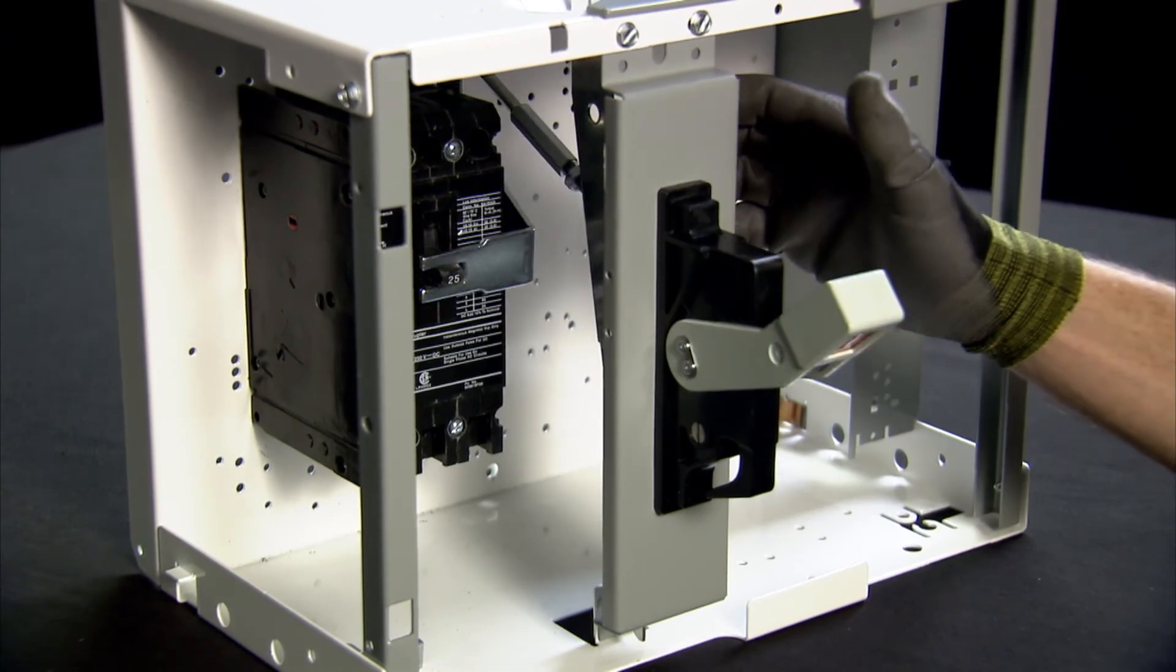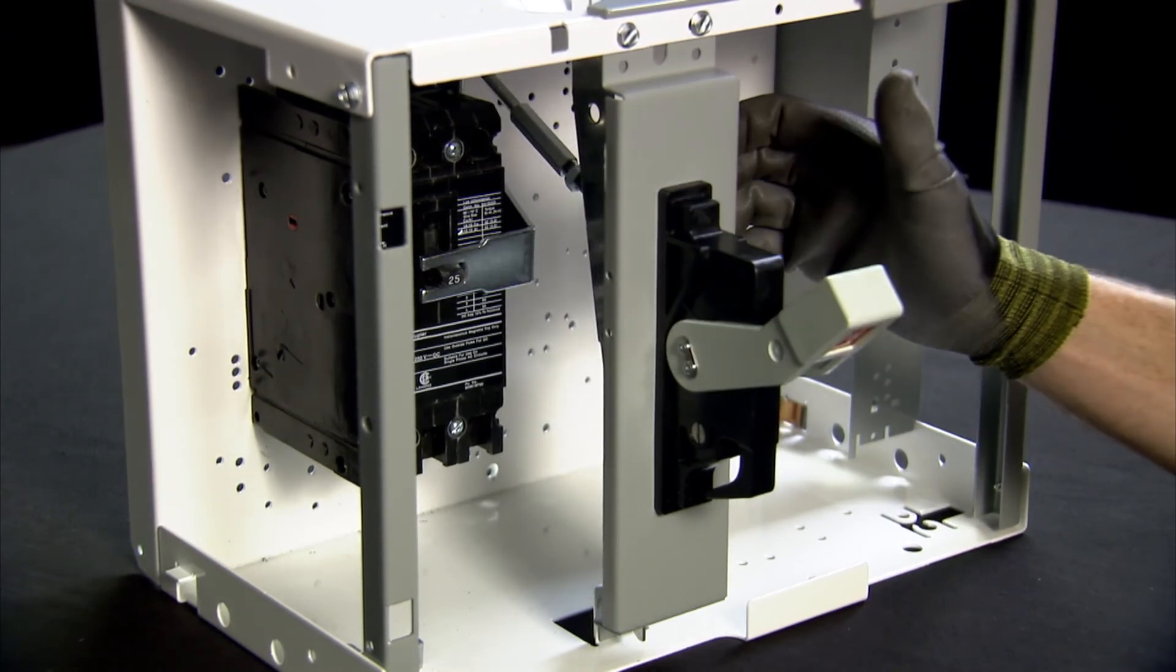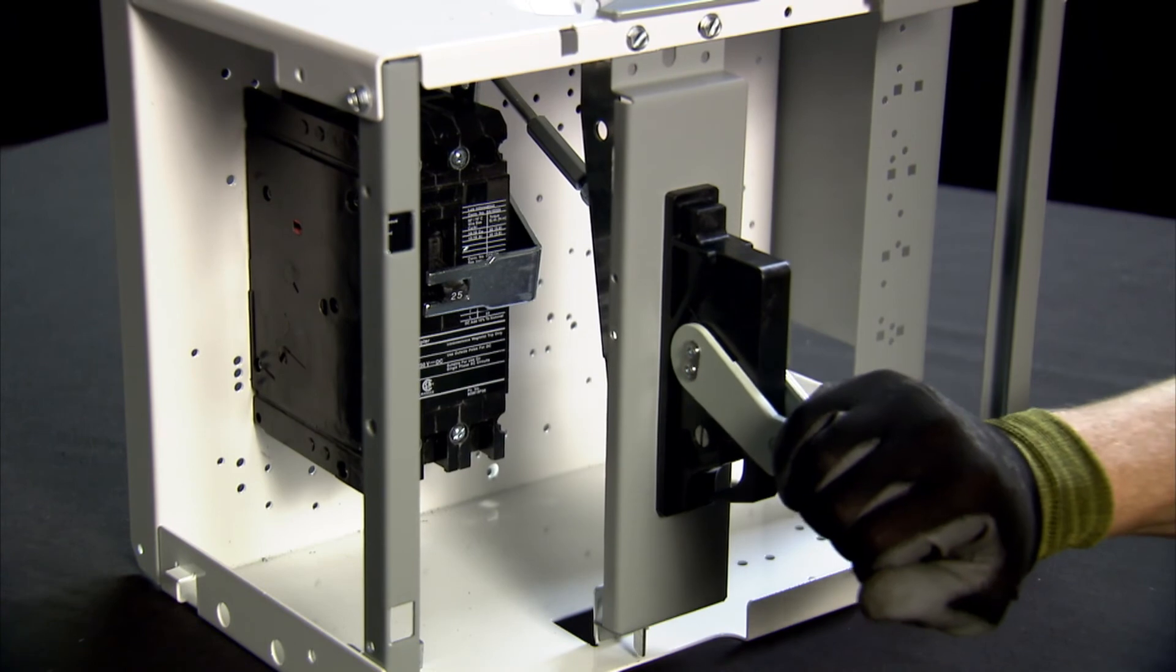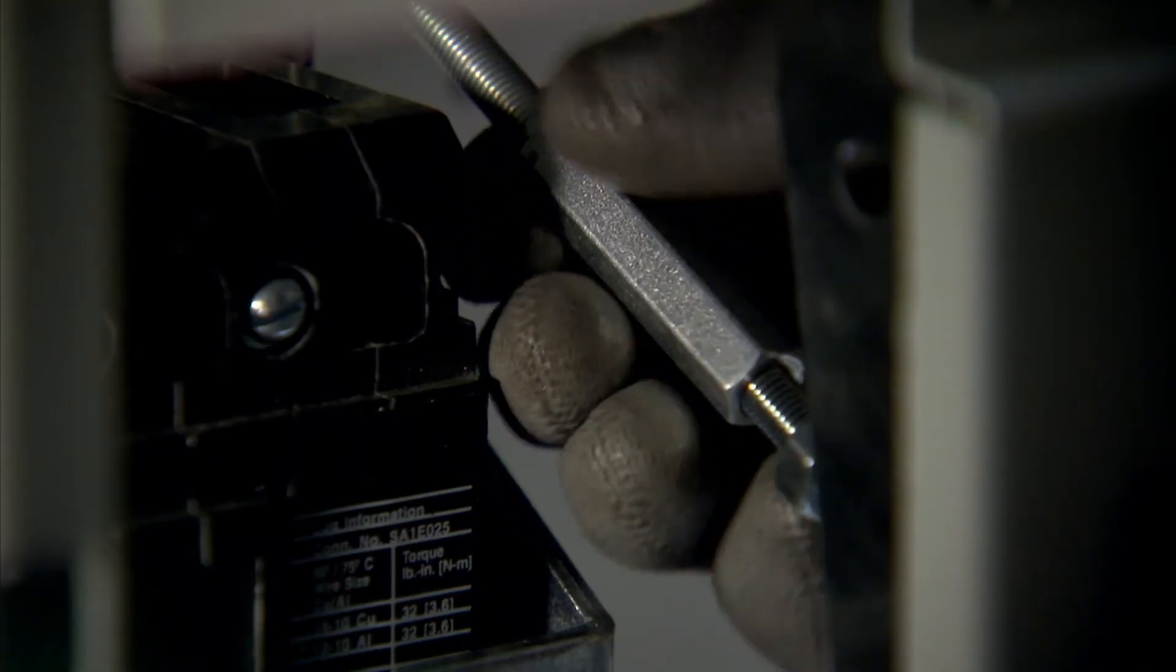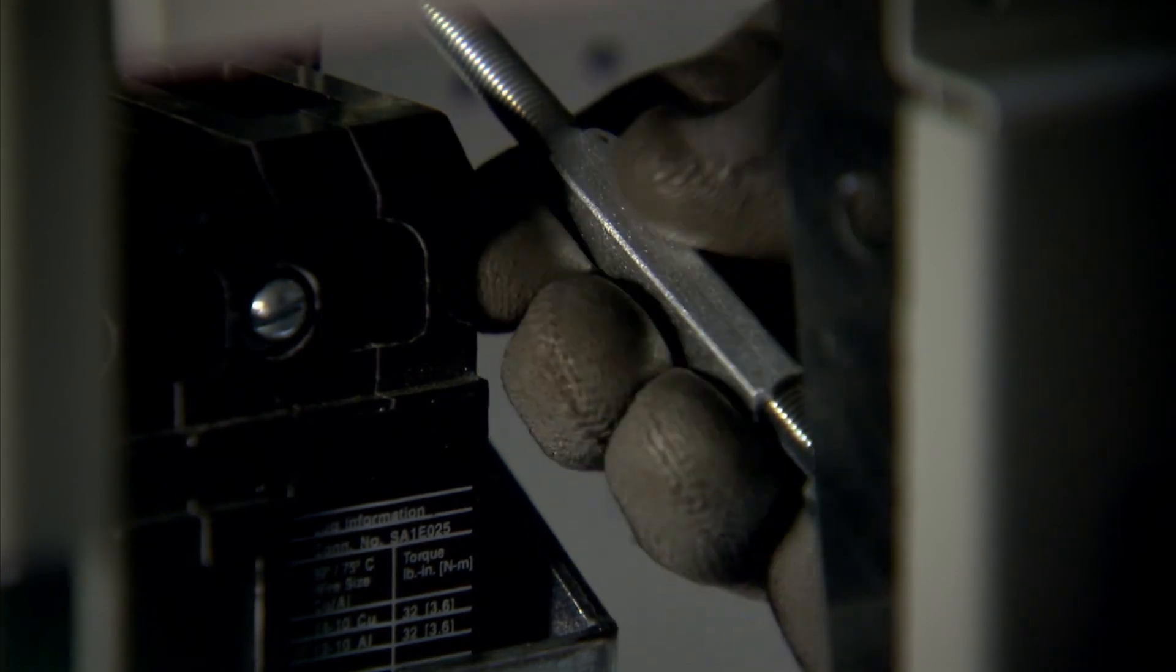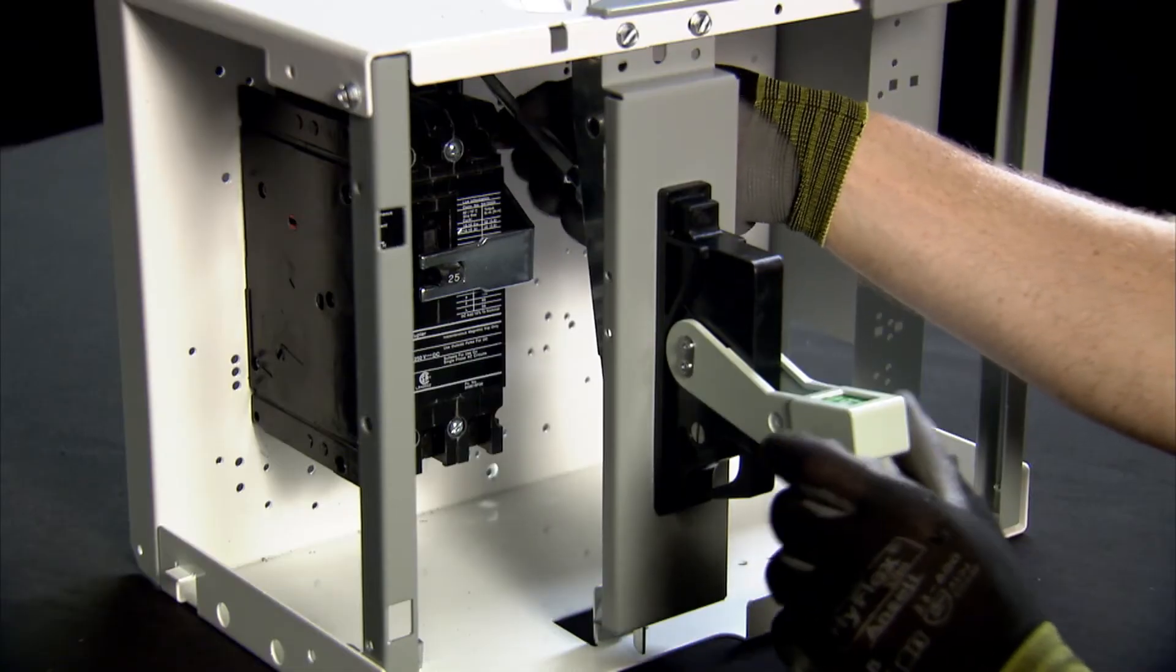If the handle will not switch the breaker to the on position and will not move fully into the off position, the length of the connecting rod is too short and must be lengthened. Rotate the turnbuckle clockwise to lengthen the rod until the switch is properly adjusted.